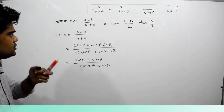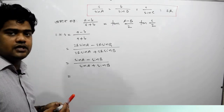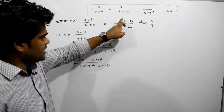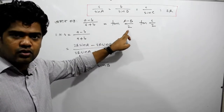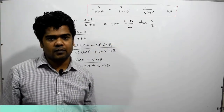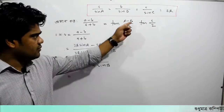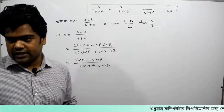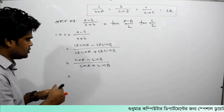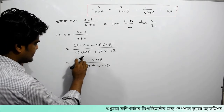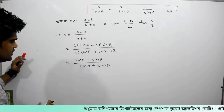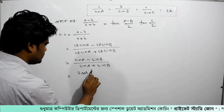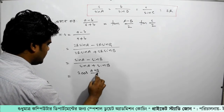We apply the sum-to-product formula. Why do we apply the C D formula? We are talking about sin C minus sin D, which will be c minus d by 2. Applying the formula: sin C minus sin D equals 2 cos((C+D)/2) sin((C-D)/2).